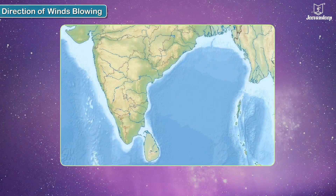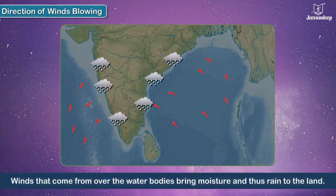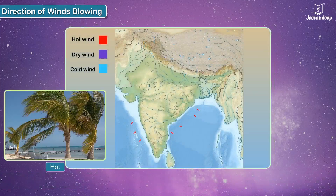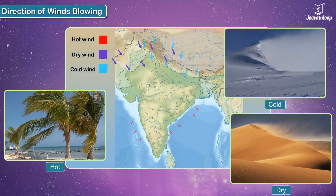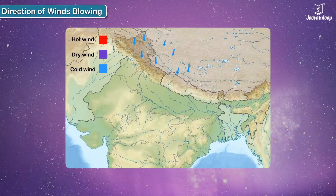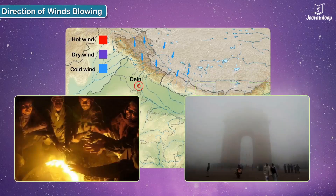Direction of winds: winds that come from over the water bodies bring moisture and thus rain to the land. The winds can be hot, dry, or cold depending upon the regions they pass through, and thus affect the climate of the area. For example, the cold winds that blow in North India after snowfall in Shimla always drop the temperatures of Delhi and surrounding areas in winter.